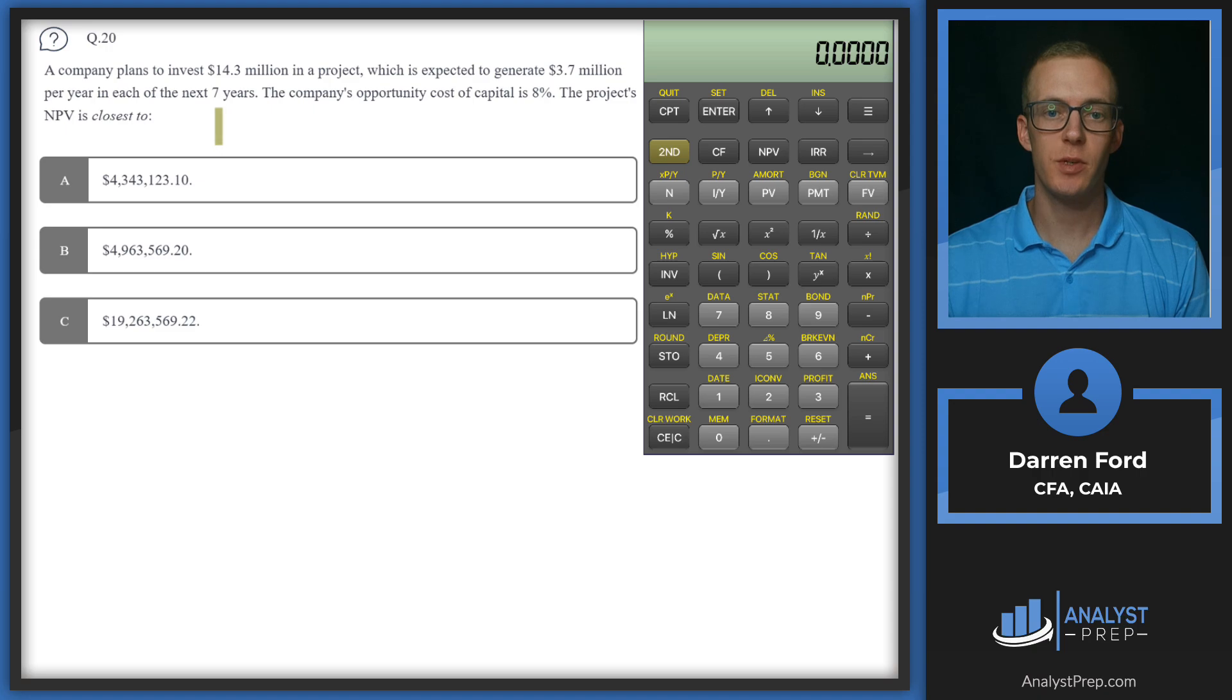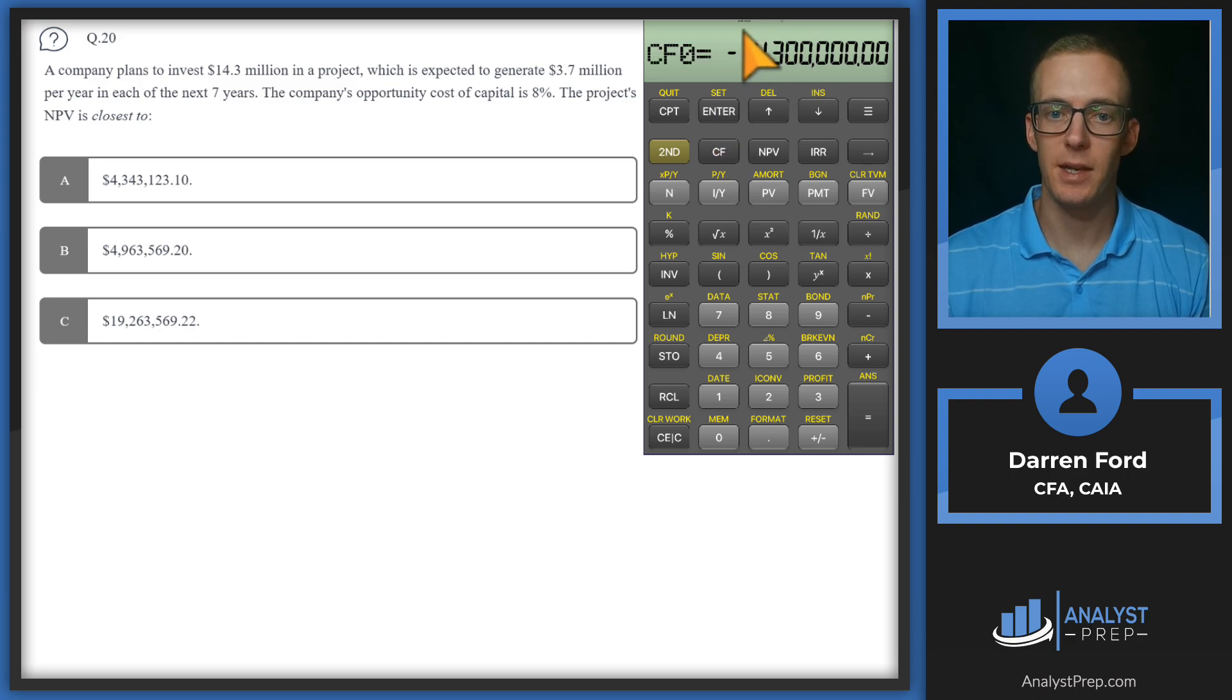Question 20. A company plans to invest 14.3 million in a project, which is expected to generate 3.7 million per year in each of the next seven years. The company's opportunity cost of capital is 8%. The project's NPV is closest to. We can just use the cash flows function on the calculator for this. I've already got the numbers plugged in, but we'll walk through it. Our cash flow at period zero is going to be that initial investment of 14.3 million. It's going to be a negative number. We will then receive 3.7 million per year, which I put in as cash flow one, and then you can just put a frequency of seven since it's that same cash flow for the next seven years. Make sure we don't have any stray cash flows in there from previous problems, which we don't. So now we can go to NPV, put in eight as our discount rate, and then we'll go down and compute. We get 4.963 million and some change, and we see that corresponds right here to answer B.